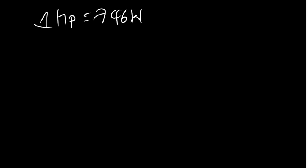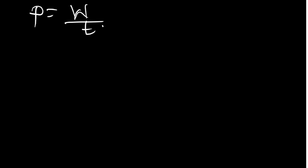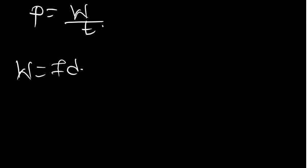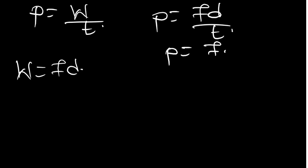Now let's talk more about power. We said power is work divided by time. Remember that work is force times distance. So I'm going to replace work with F times d, giving us: power equals force times distance divided by time.